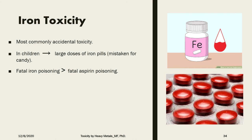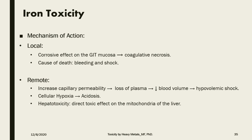Another heavy metal toxicity is iron toxicity, which is very common in children who mistake iron pills for candy. Ingestion of large doses of iron can be very severe, leading to fatal incidents. The mechanism of action includes local corrosive effects on the GIT causing coagulative necrosis, leading to bleeding and shock. Remote manifestations include increased capillary permeability leading to loss of plasma, decreased blood volume, and hypovolemic shock. It also causes cellular hypoxia with acidosis, and hepatotoxicity due to the direct effect of iron on the mitochondria of the liver.